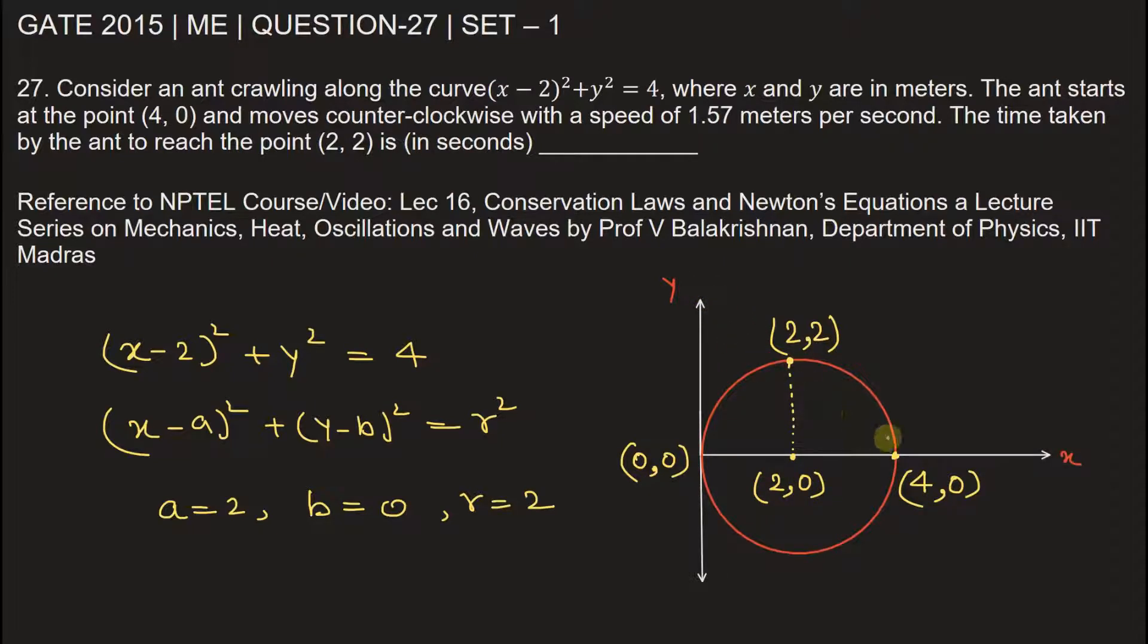In the problem, it is given that the ant starts to crawl from point A, which is (4, 0), and moves to point B, which is (2, 2), in the counterclockwise direction from A to B.